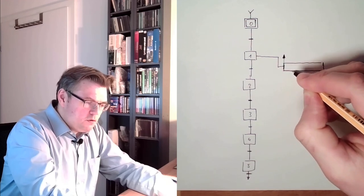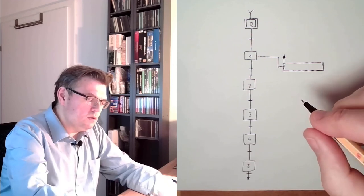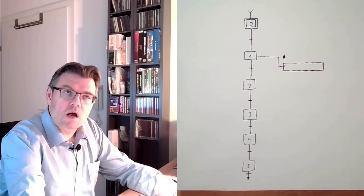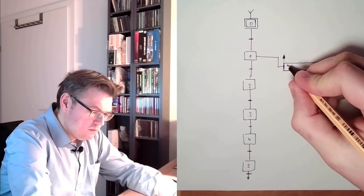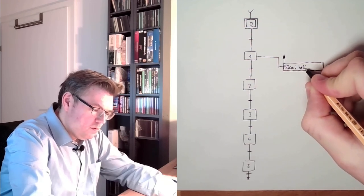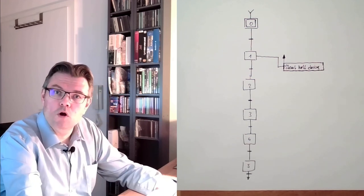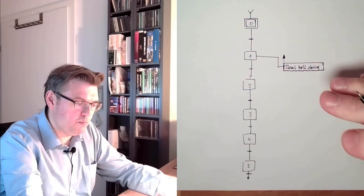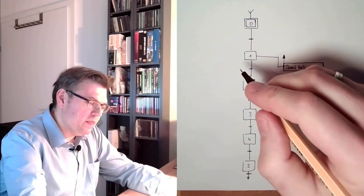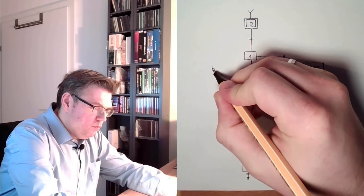What was the first command in our sequence? This was start, start belt drive. So close the contactor of the belt drive. Transition would then be belt full speed.